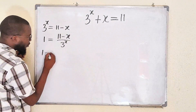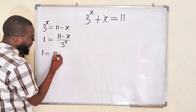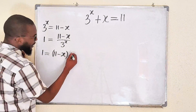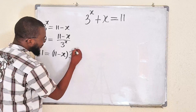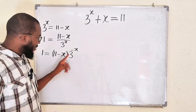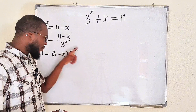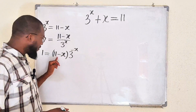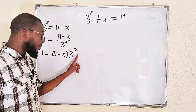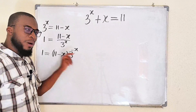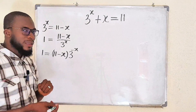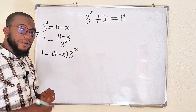So this is 1 equal to 11 minus x, multiplied by 3 to the power of negative x. I want to see this exponent exactly as 11 minus x. We can do that by multiplying this 3 to the power of negative x by 3 to the power of 11, according to one of the laws of indices.